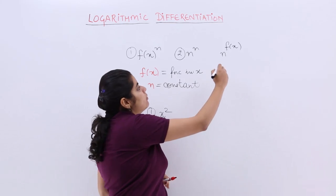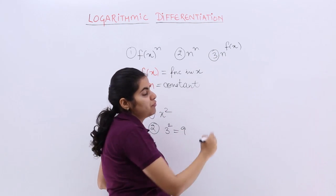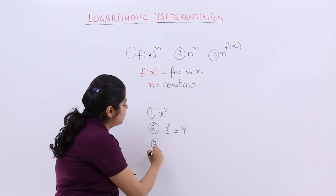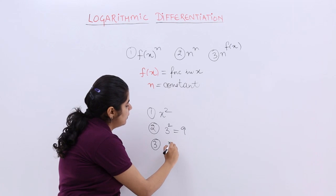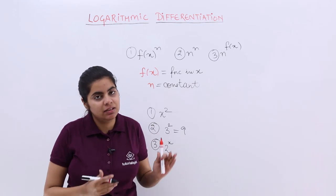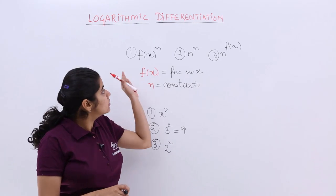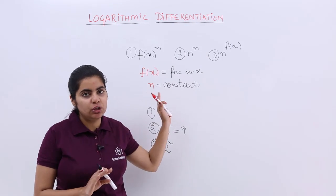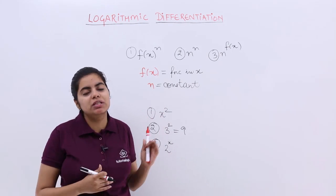And the third category is n raised to the power f(x). Now n raised to the power f(x) means say 2 raised to the power x. It is nothing but the formula of a raised to the power x. Differentiation we know. So these three categories we have covered and we know how to differentiate if something of this form is given.